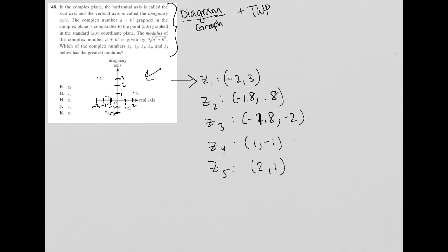So the question says: in the complex plane, the horizontal axis is called the real axis and the vertical axis is called the imaginary axis. The complex number A plus BI, graphed in the complex plane, is comparable to the point A, B. What that tells me is that the real axis is like the A axis and the imaginary axis is like the B axis, graphed in the standard XY coordinate plane — so A is like the X and B is like the Y.